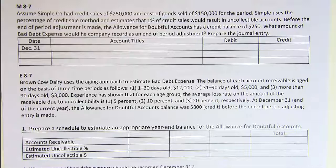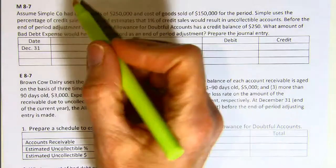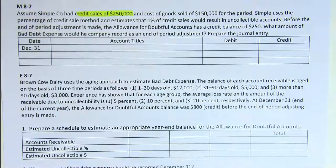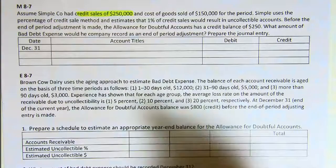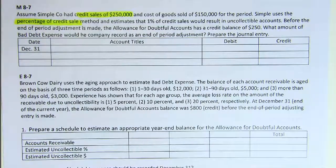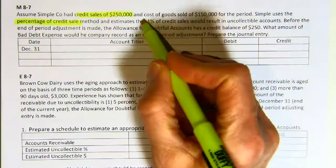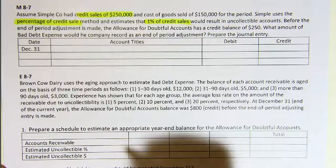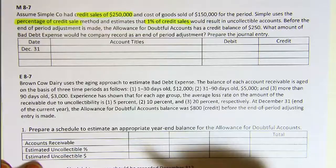Assume Simple Company had credit sales of $200,000 and cost of goods sold of $150,000 for the period. Simple uses the percent of credit sales method and estimates that 1% of credit sales would result in uncollectible accounts. Before the end of period adjustment is made, the allowance for doubtful accounts has a credit balance of $250. What amount of bad debt expense would the company record as an end of period adjustment?